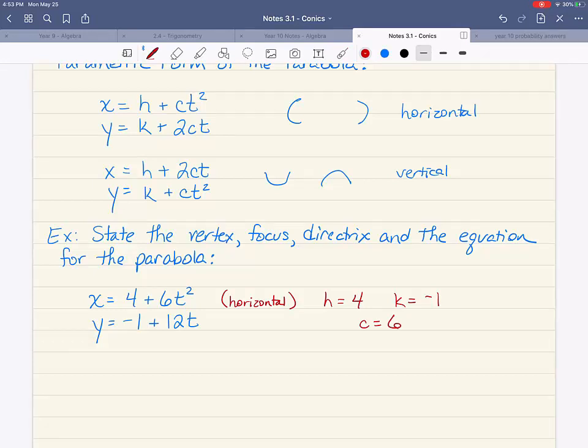You can actually find the vertex focus and directrix before you write it in the other form. And I actually think it's a little bit easier because you've already got the three pieces of information you need in order to do this. So I'm going to come over here. I'm going to write down vertex, focus, and directrix. And I'm going to find all of those pieces of information.